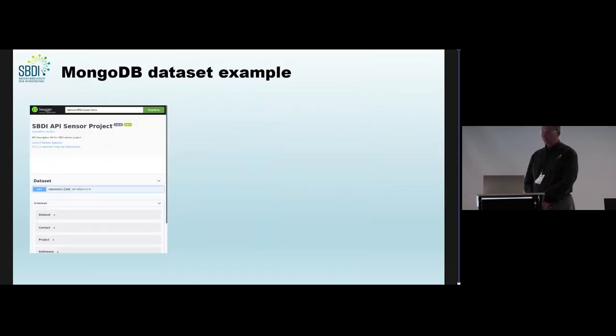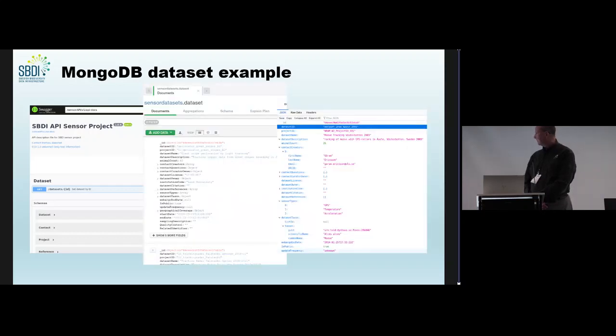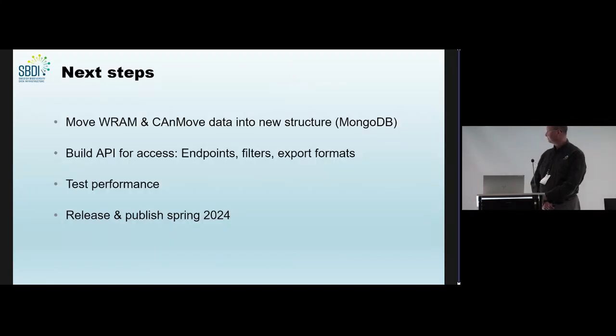We implemented this in a Mongo database with several data sets. Currently, we have five different data sets in this system. It's the great snipe geolocator data set, then three tracking radar data sets, and one more traditional GPS moose tracking data set. Our next steps would be to move everything we have in the RAM and CanMove systems into the new joint structure. We will build an API for access and define the endpoints, the filters, the export formats. Then we, of course, have to test the performance and plan to publish and release everything in spring 2024.